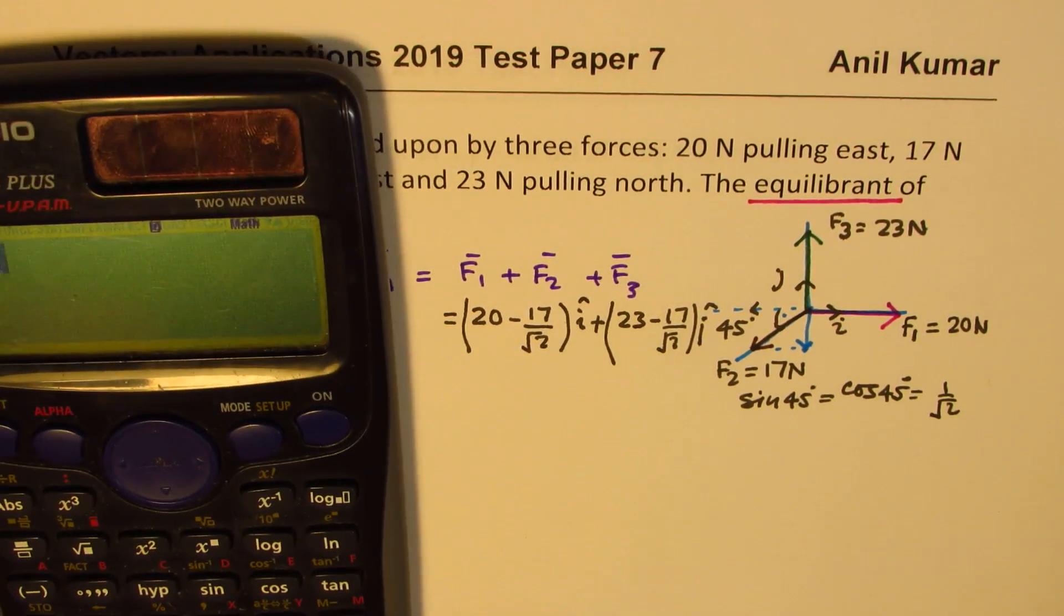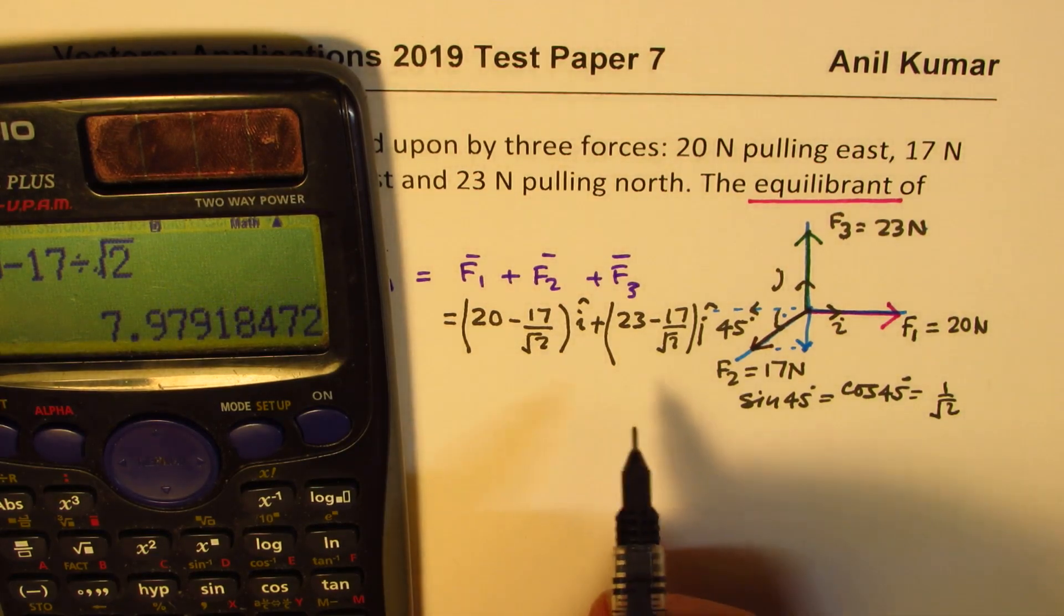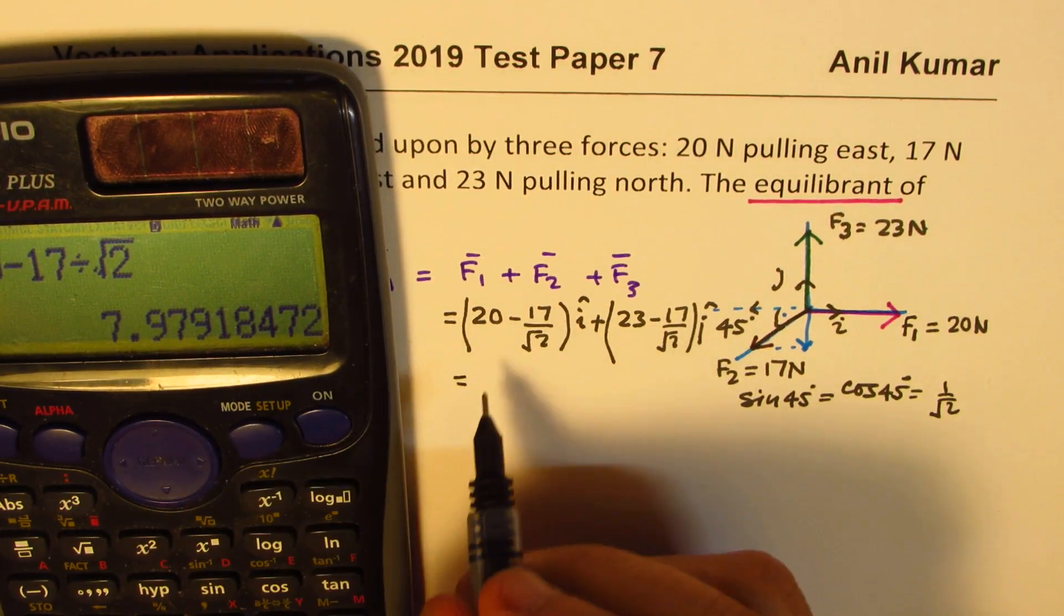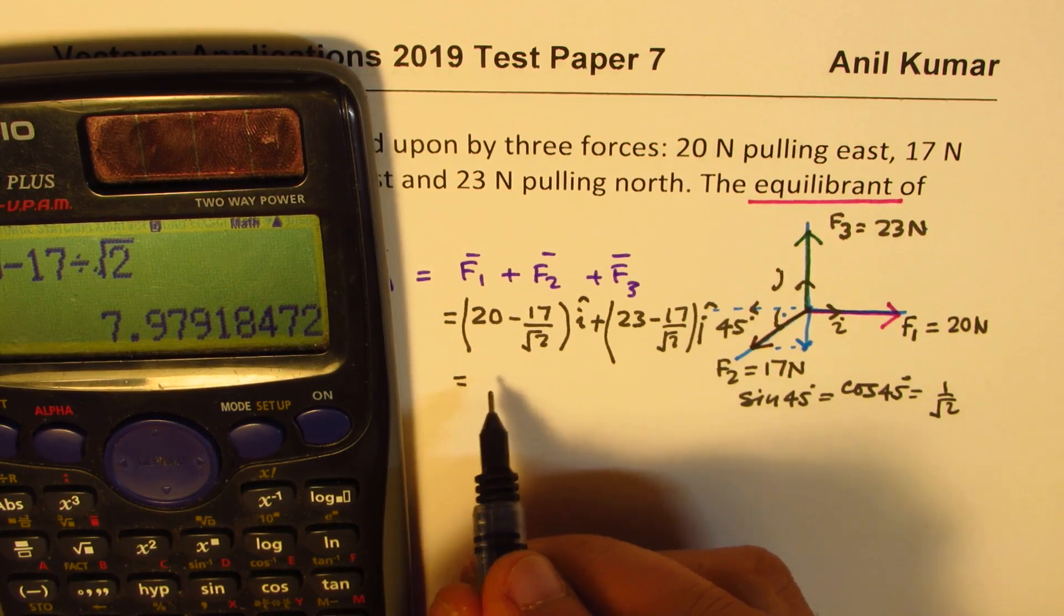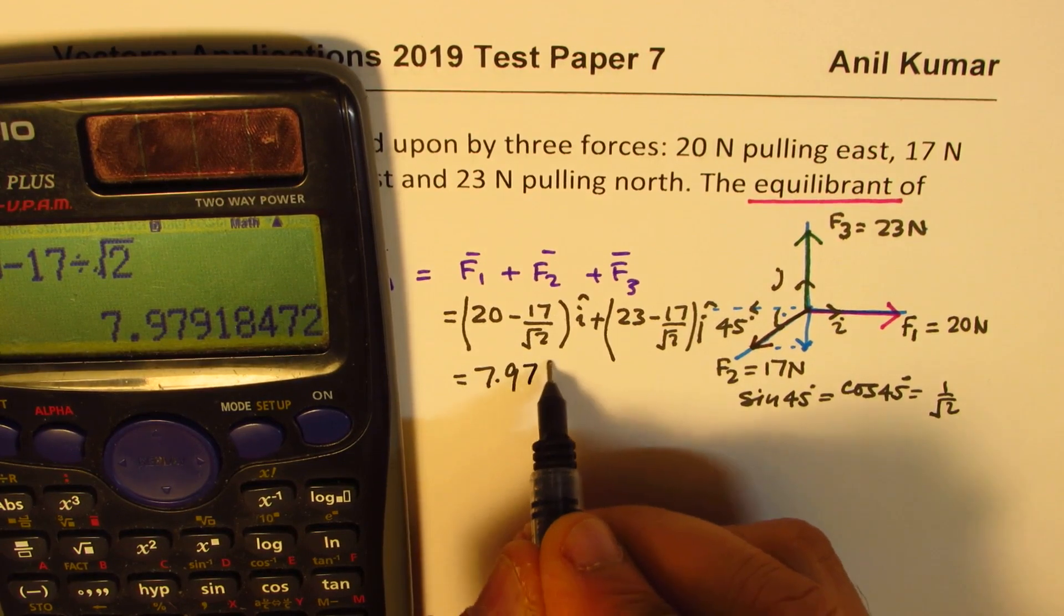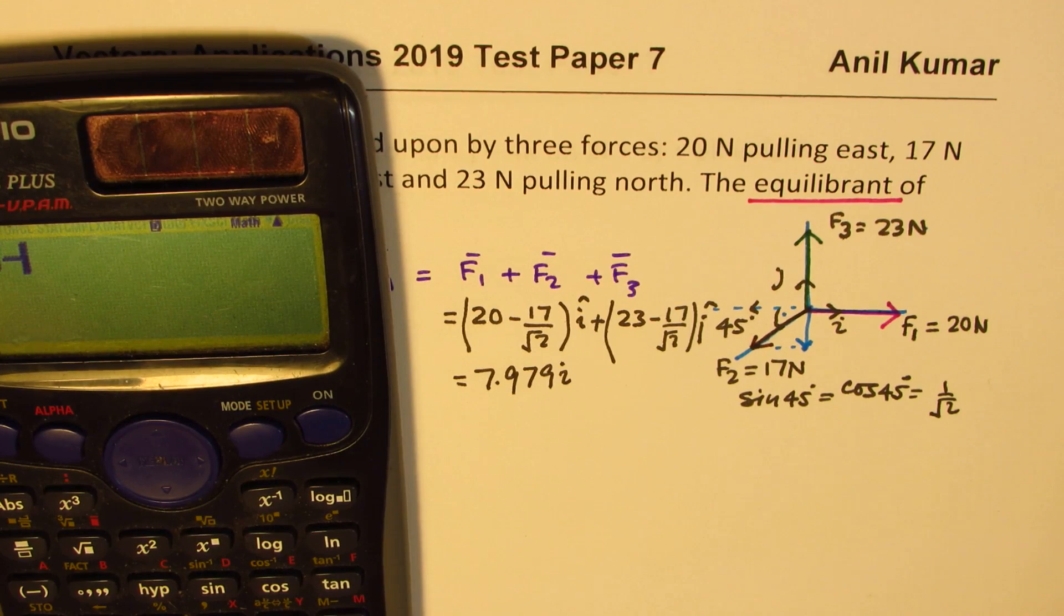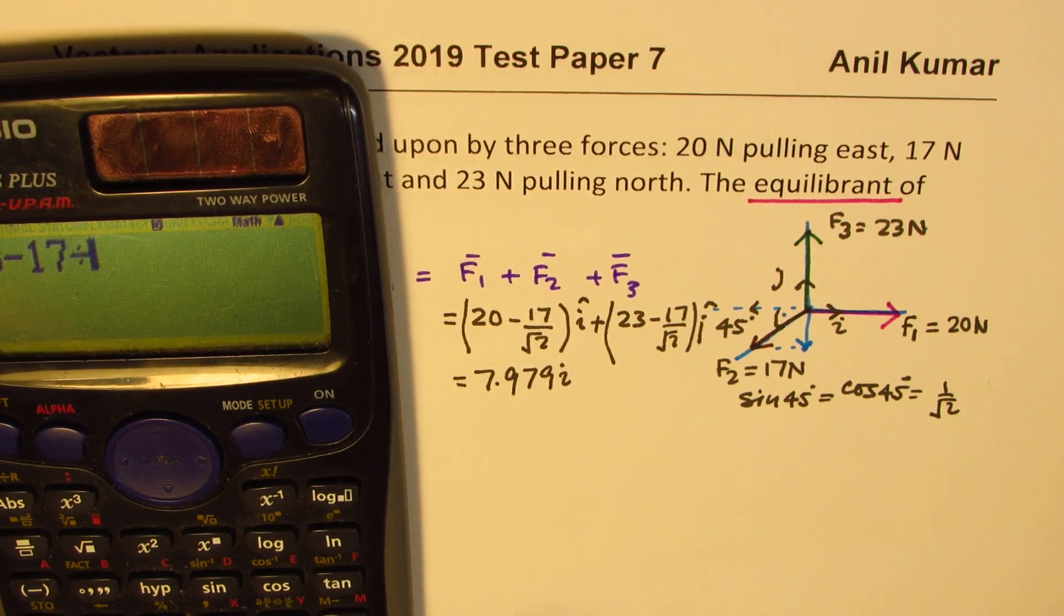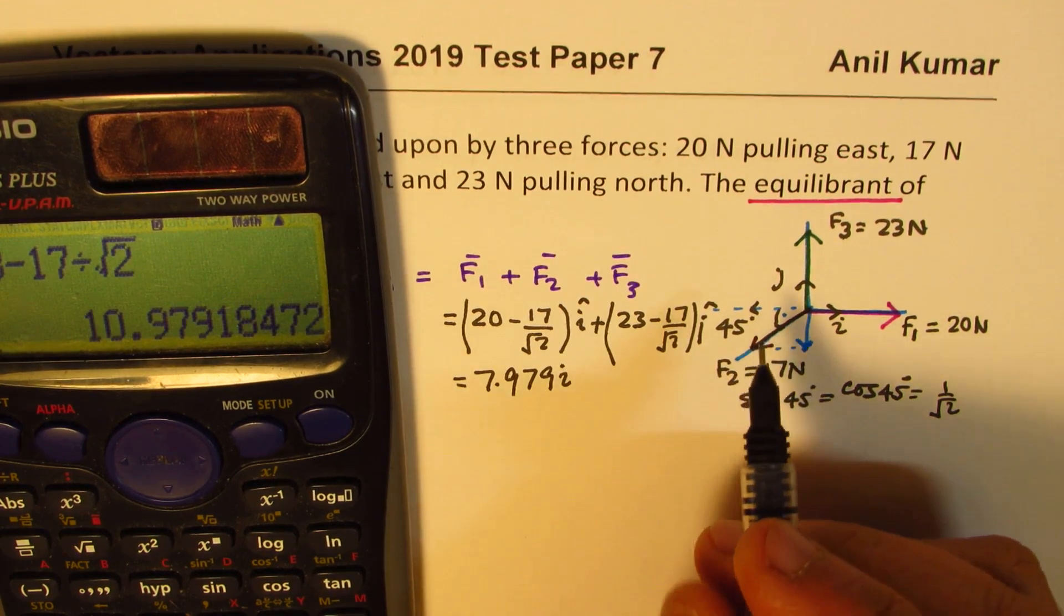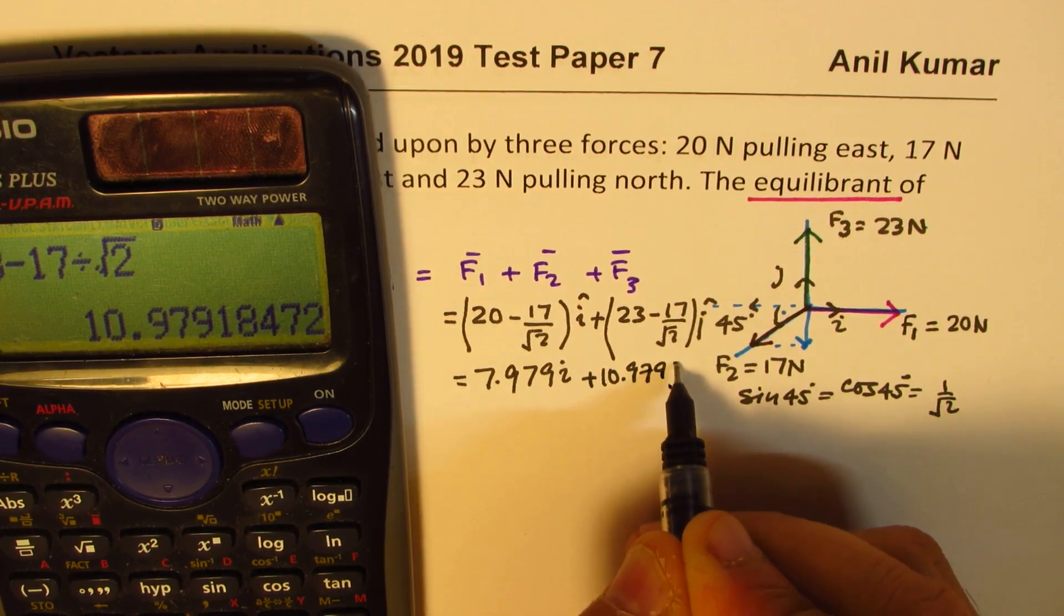So that becomes your net force. We can use calculator to find this value. So we have 20 minus 17 divided by square root 2, which is equal to in decimals 7.979. So let me write 7.979i. And then we have 23 minus 17 divided by square root 2, that in decimals is 10.979j.